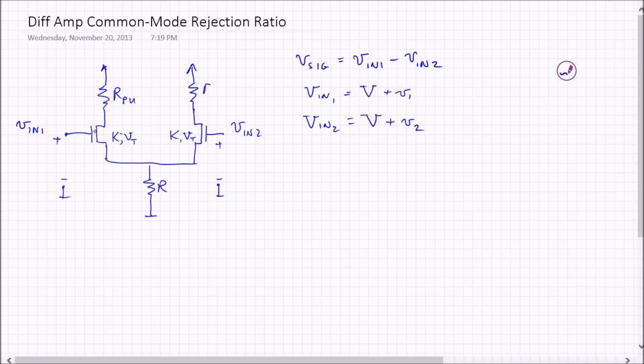There's a couple of pull-up resistors here. And there's going to be an output voltage here, which again is going to have a DC and a small signal portion. And we want to find the common mode rejection ratio, which we'll abbreviate CMRR.